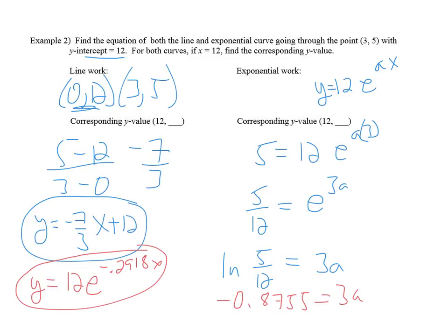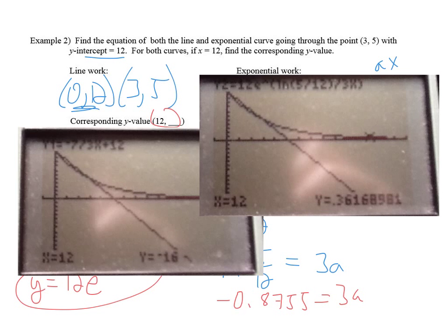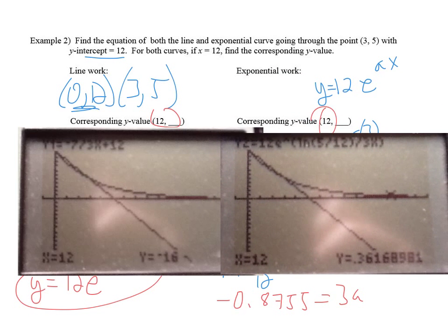So there's my two equations. And then if I check this on my calculator, I substitute in 12 for each of these. So I graphed the two functions on the calculator, and I evaluated it both at x equals 12. And for the linear, I'm getting negative 16. And for the exponential, I'm getting about 0.362. Two very different models. So it's important to know which one you want, which one's appropriate. So that's that. We should go ahead and do the work on the rest of that packet.